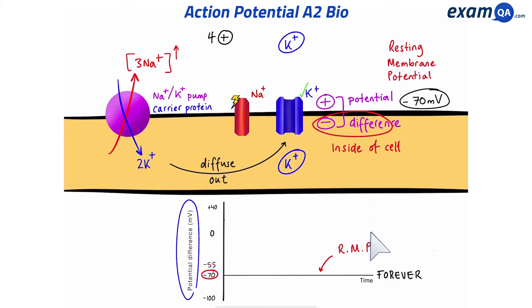So this resting membrane potential can be like this forever, if not stimulated. But we haven't come all this way for nothing. Let's see what happens when the neuron gets stimulated.